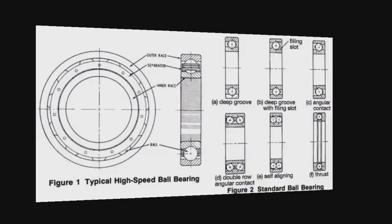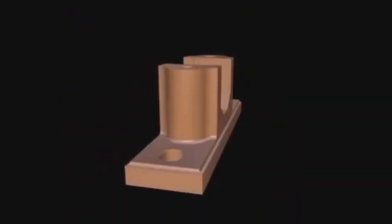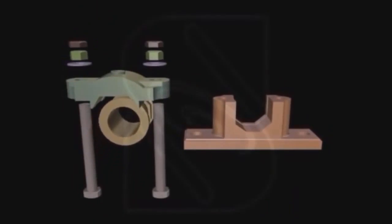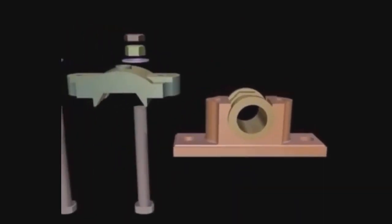Now the next machine element is the plummer block. Plummer block is the most common mechanical element that is used. On your screen there is an assembly animation of the plummer block. A plummer block is a pedestal used to provide support for a rotating shaft.